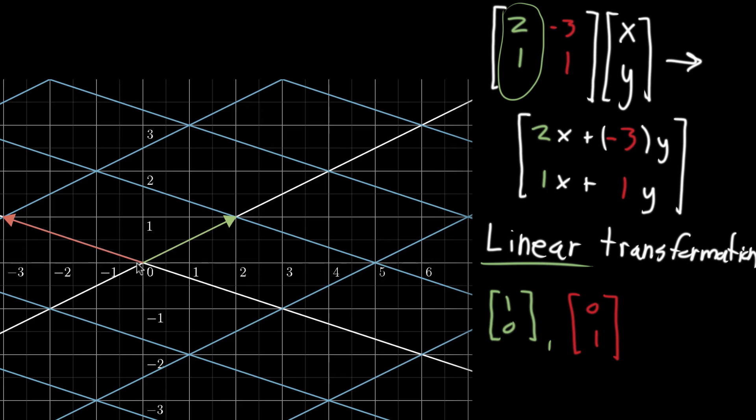That corresponds very directly with the fact that the first column of our matrix is (2, 1). And similarly, the second vector, the one that started off at (0, 1), ends up at the coordinates (-3, 1). And that's what corresponds with the fact that the next column is (-3, 1). It's actually relatively simple to see why that's going to be true.